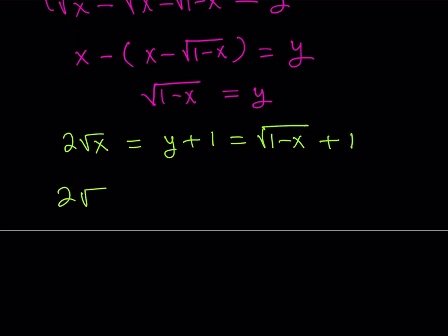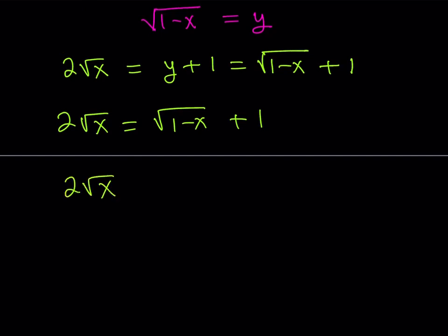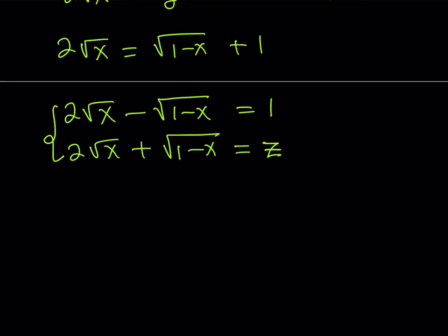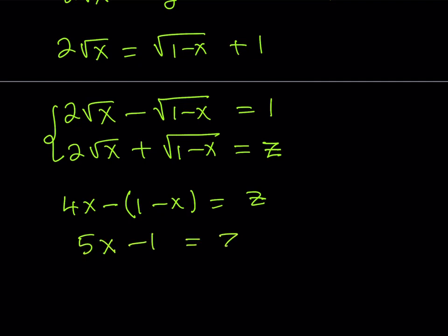We get a radical equation, which we'll solve in an interesting way again. I'd like to put these two radicals together on the same side and use conjugates again. This pairs up nicely with another expression: 2 times the square root of x plus the square root of 1 minus x, which I'll call z. If we multiply these two together, from difference of two squares, we get 4x minus (square root of 1 minus x) squared, which is 1 minus x. The product is z, because 1 times z equals z. Simplifying gives: 5x minus 1 is equal to z.